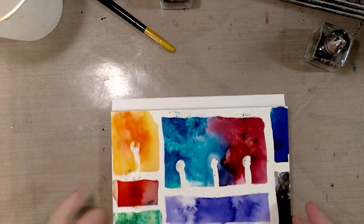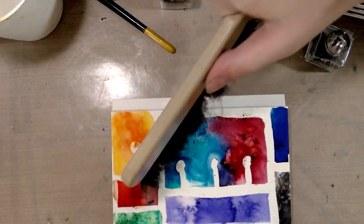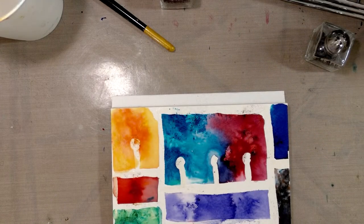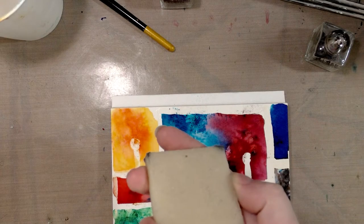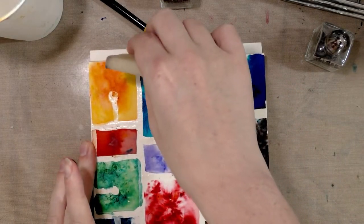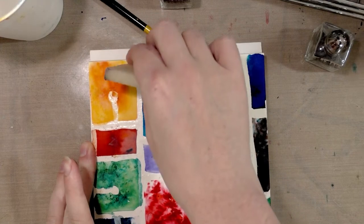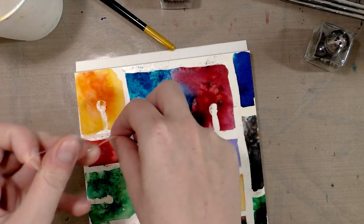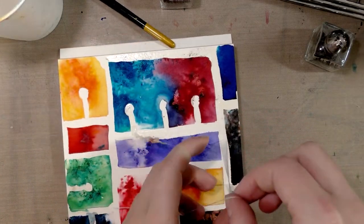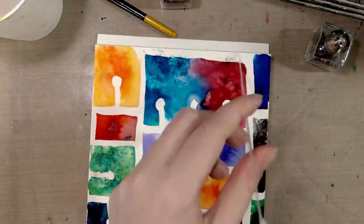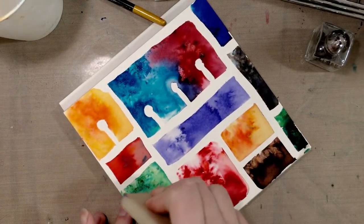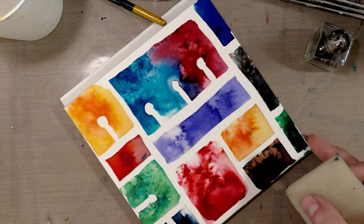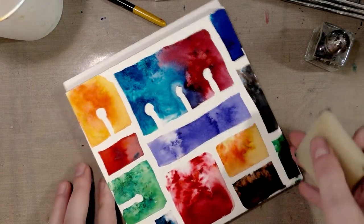All right guys, so this has had plenty of time to dry, so we're going to want to brush away the excess Brusho, then we're going to want to use our rubber cement pickup and gently start peeling up our masking fluid. And finally you have a very simple watercolor technique that you can either use with Brusho or you can use with just flat watercolors that would be perfect for cards or for simple backgrounds.